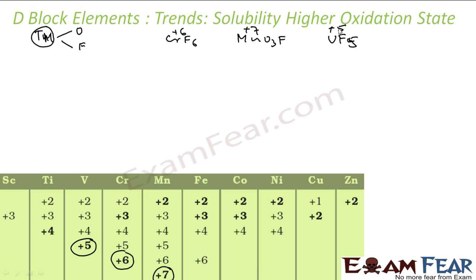Why? Because the ability of fluorine to stabilize the highest oxidation state is due to its very high electronegativity — it sucks electrons toward itself, delivering positive charge to the metal and enabling higher oxidation states. Also, fluorine's small size means very high lattice energy and high bond enthalpy.